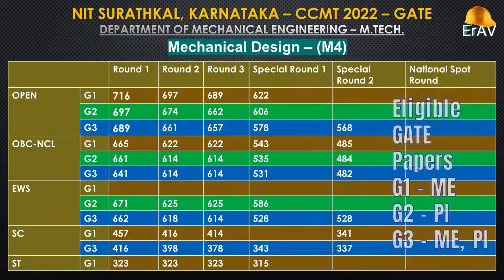Mechanical Design eligible GATE papers: Group 1 — Mechanical (ME). Group 2 — Production and Industrial (PI). Group 3 — ME, PI.